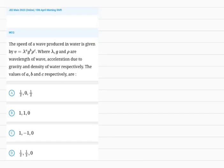Okay, so let's solve this JEE 2023, 15th April morning shift question. The speed of wave produced in water is given by V equals lambda to the power a, G to the power B, Rho to the power C, where lambda is wavelength, G is acceleration due to gravity, and Rho is density.